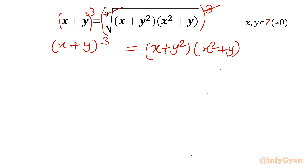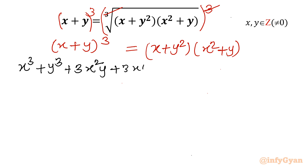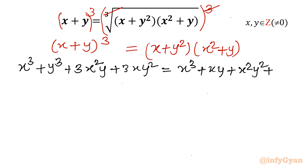Now I will use the algebraic identity for (a + b)³, writing it as a³ + b³ + 3a²b + 3ab². Then expand the RHS: x times x² gives x³, x times y gives xy, y² times x² gives x²y², and y² times y gives y³. So we have x³, y³, x²y², and the cross terms.